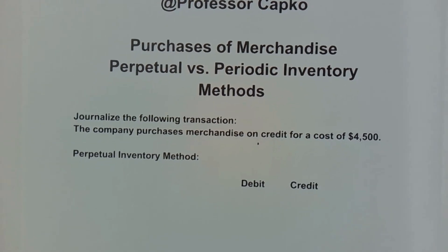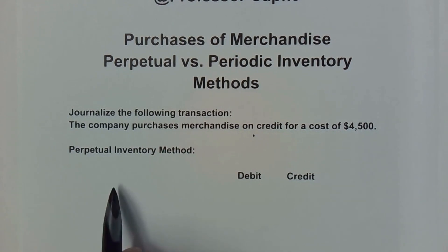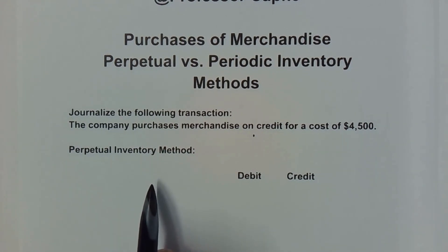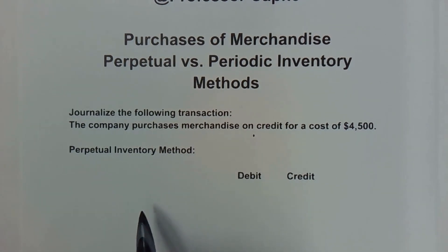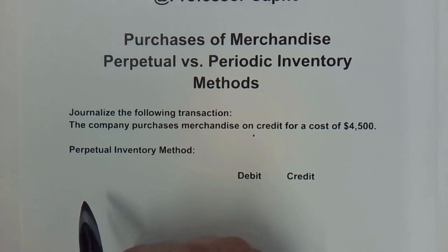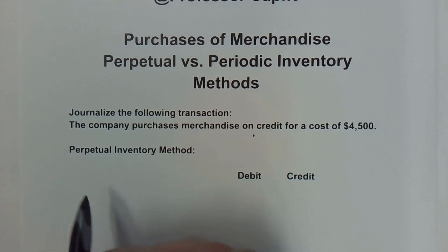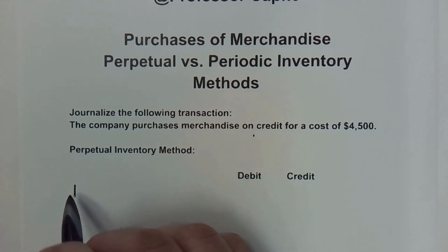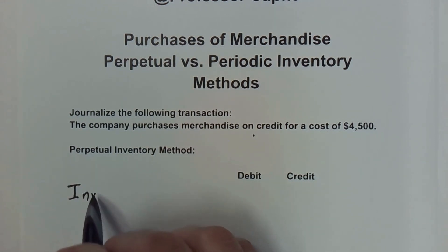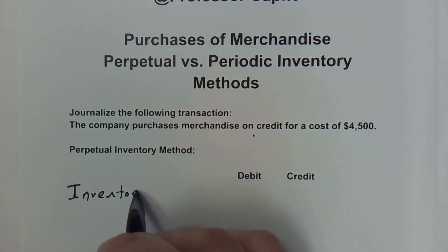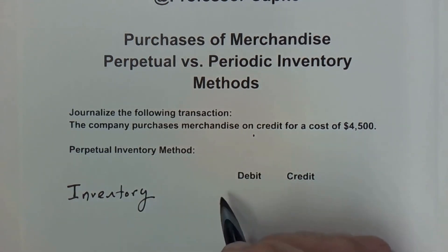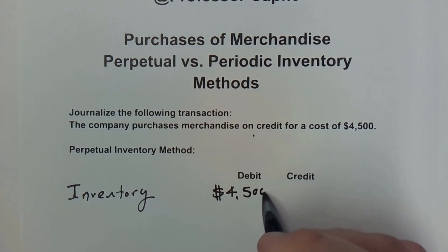The first method we're going to use is the perpetual inventory method. When you use perpetual inventory, the company records the purchase directly into inventory. Inventory is an asset, and assets increase with debits. So we're going to debit the inventory account for the full cost of the merchandise — $4,500.